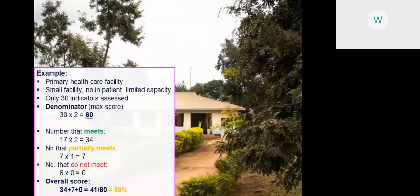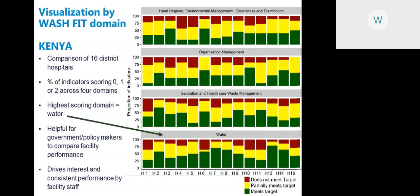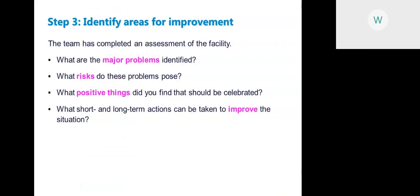Here's an example from Kenya where 16 district hospitals (H1 to H16) were compared against each other, with data visualization by domain. The water section was the best performing, showing the highest quantity of green. This is a helpful way for government or policy makers to compare facility performance, and it can also drive competitive improvement — if facility staff see they are not performing as well as local hospitals, it may encourage and incentivize them to make improvements.